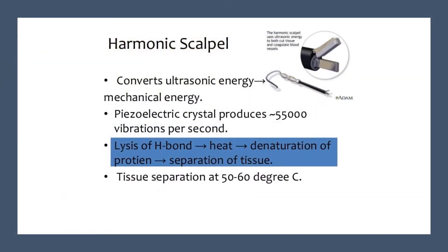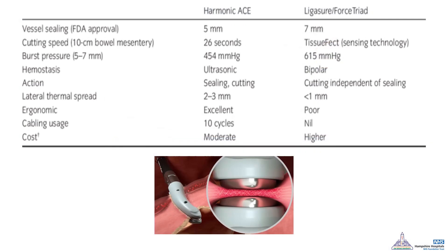Special instruments used with diathermy include the Harmonic, very commonly used in laparoscopic surgery. It converts ultrasound energy into mechanical energy, causing heat transformation and allowing tissue denaturation and separation. The LigaSure works differently, relying mainly on bipolar diathermy power combined with a pressure effect, then an incorporated knife is used to make the separation.